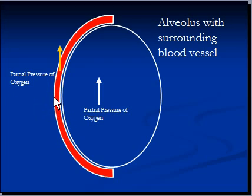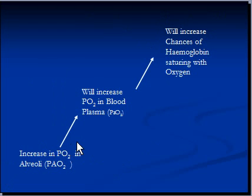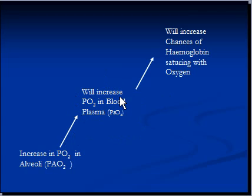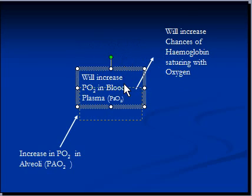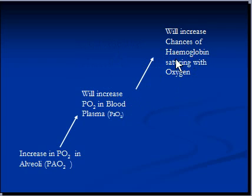However, while partial pressure of oxygen in plasma and oxygen saturation move together, they are not directly proportional to each other. The increase in alveolar partial pressure increases plasma partial pressure by the same proportion, but the increase in plasma partial pressure increases oxygen saturation in a non-linear, non-proportional way.